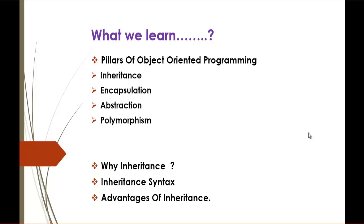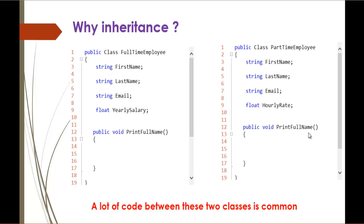Right now we'll see why inheritance is needed. Here I'm having two classes, FullTimeEmployee and PartTimeEmployee. When you observe these two classes very carefully, we'll come to know there are some properties and methods which are common in both the classes. For example, FirstName, LastName, Email, and the method PrintFullName are common in both the classes. From here, we can come to know a lot of code between the two classes is common, and now the job of inheritance will start.